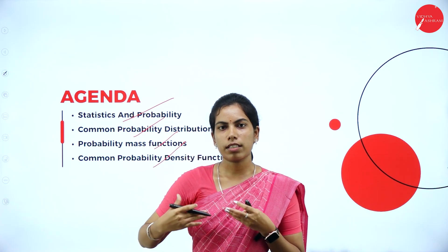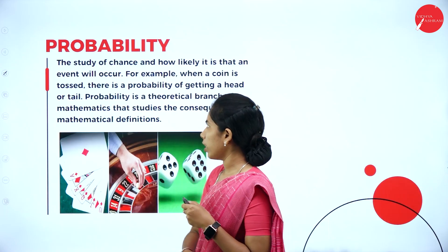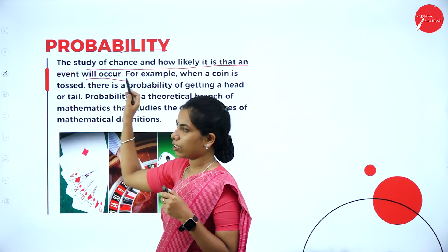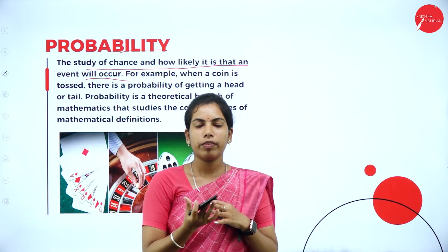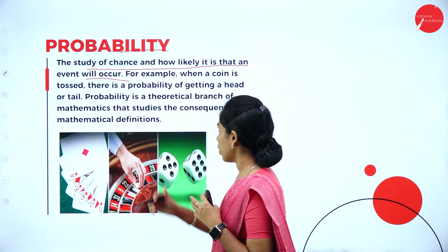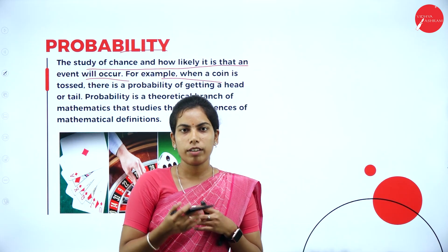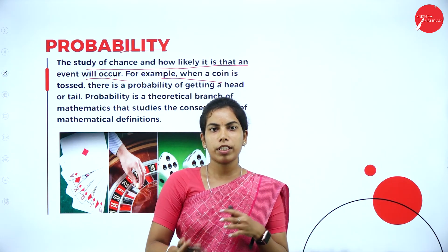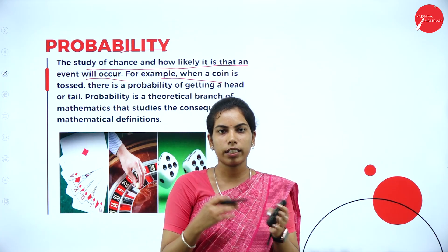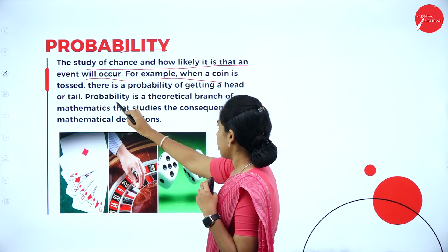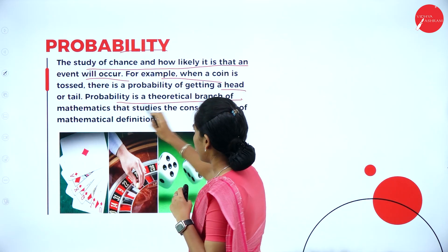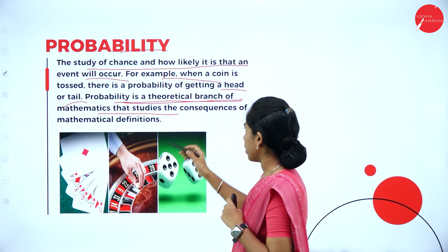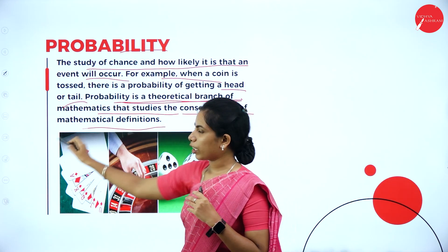Probability is the study of chance and how likely it is that an event will occur. Here is one example: when I flip a fair coin, I get either tail or head — a 50-50 chance, not 100% head or tail. Likewise, the probability of head or tail — probability is a theoretical branch of mathematics that studies the consequences of mathematical definitions.